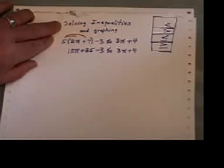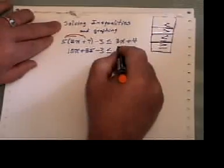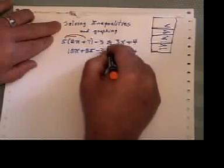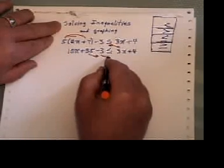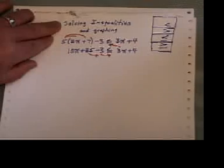So I've got rid of all brackets. Now, let's bring the 3x across the border, and the plus thirty-five, and the minus three onto that side of the border.